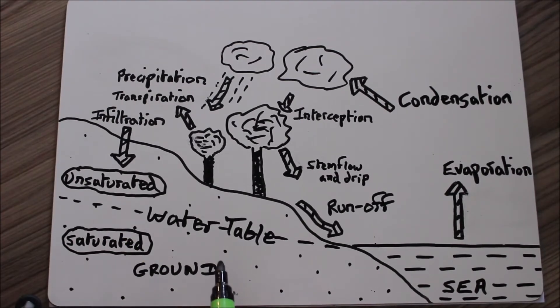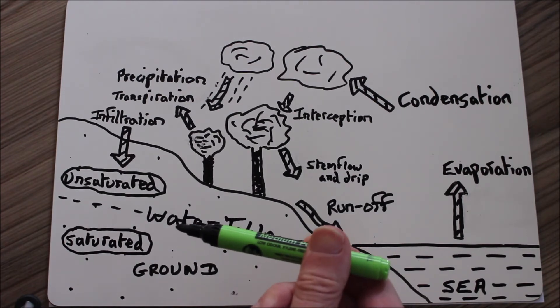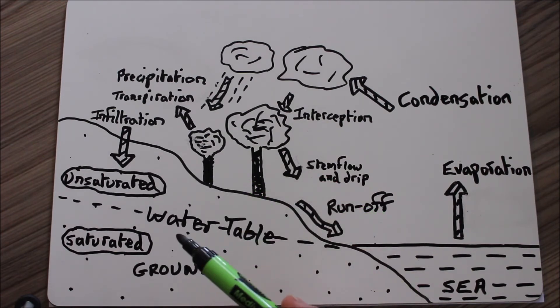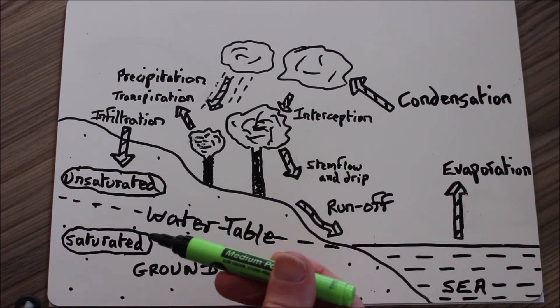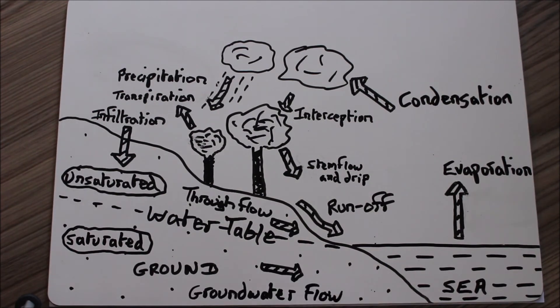The line that separates the unsaturated from the saturated ground is called the water table. If we get loads and loads and loads of rain, the water table will be higher within the ground. And if we don't have so much rain, the water table will sink lower in the ground as rivers carry the water away to the sea.